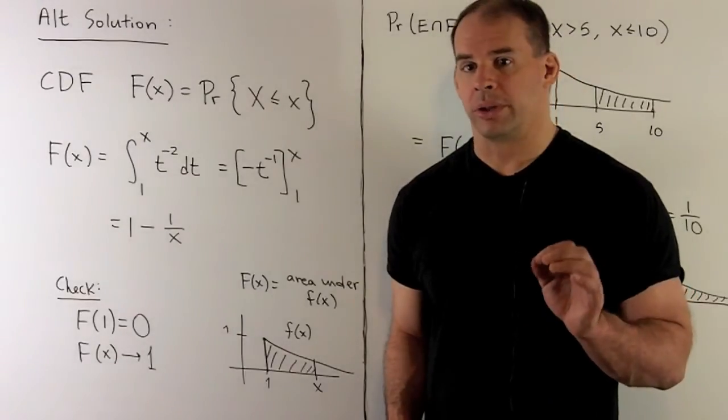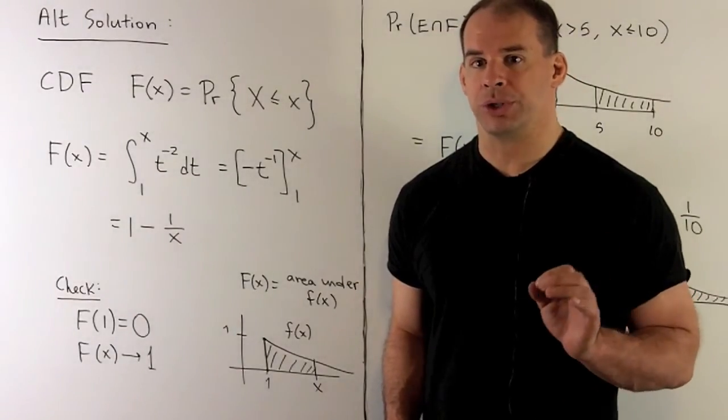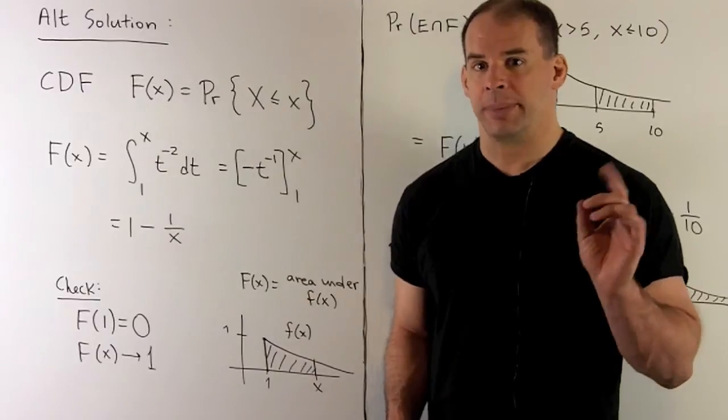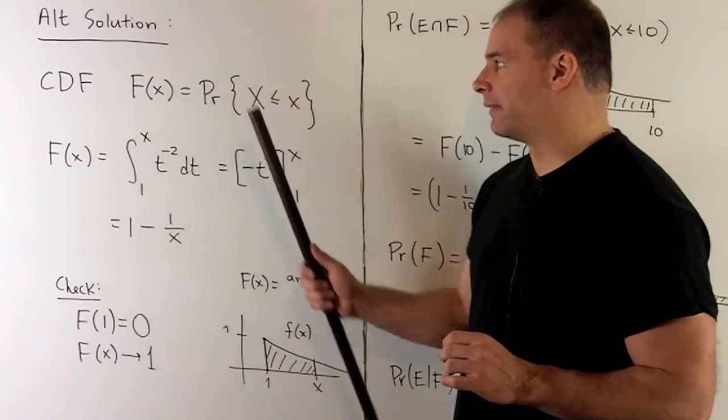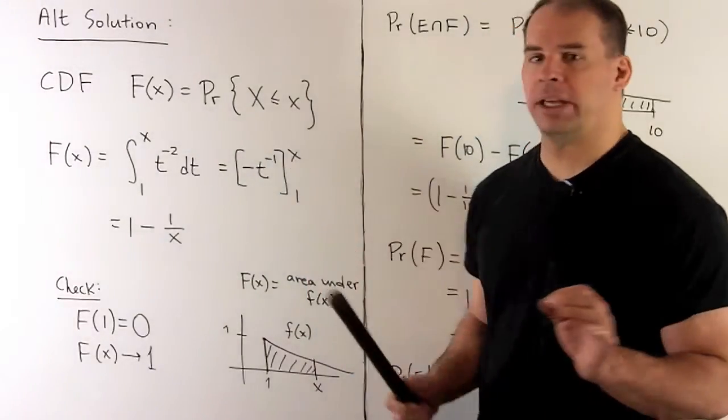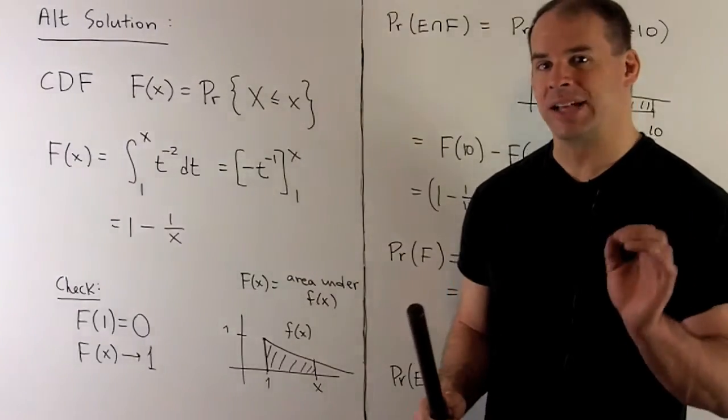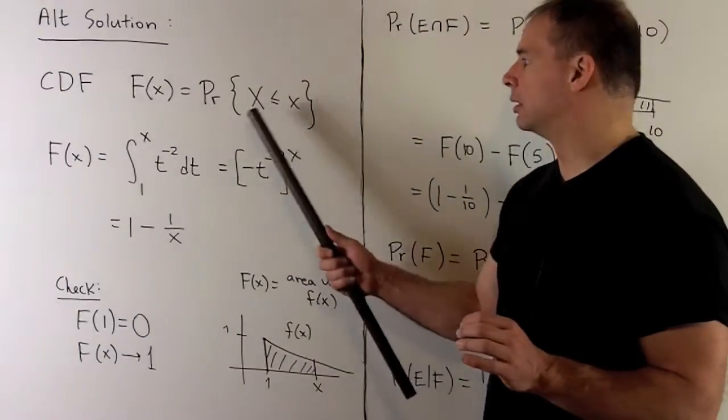Here's another way to look at the problem. Let's consider the cumulative distribution function. It's gonna be defined as capital F of x equal to the probability of our random variable less than or equal to x.